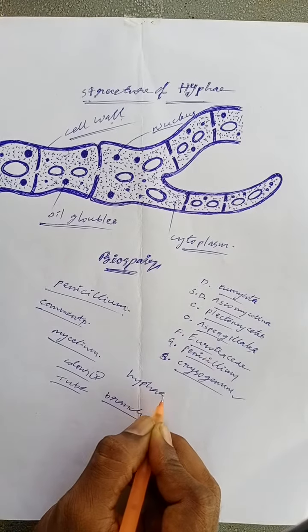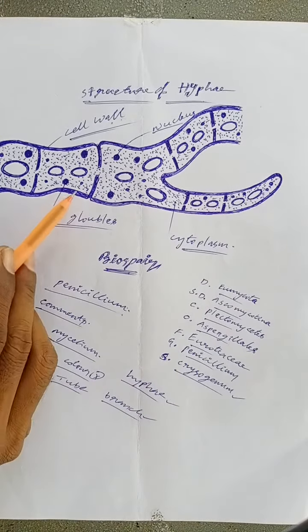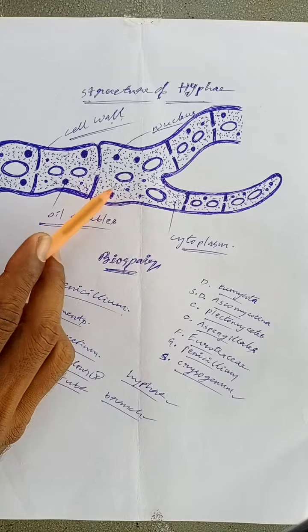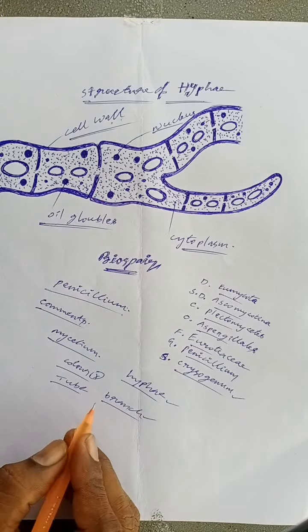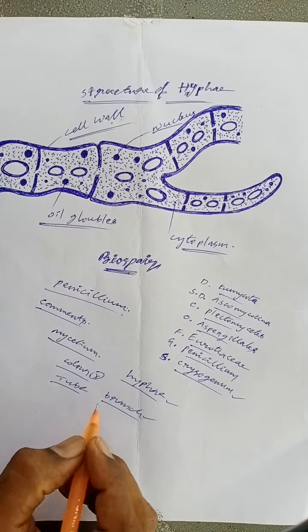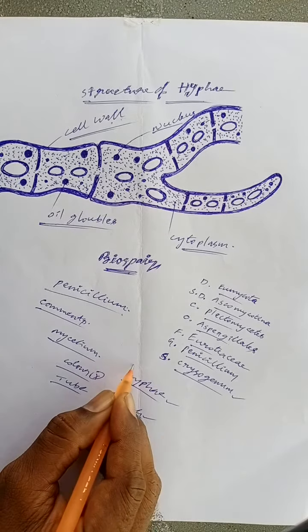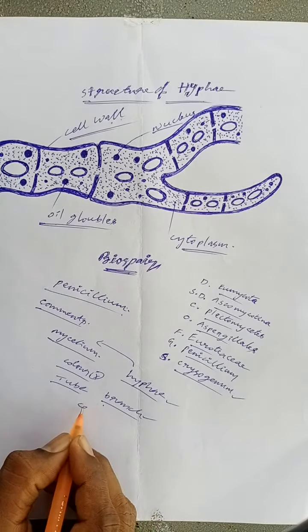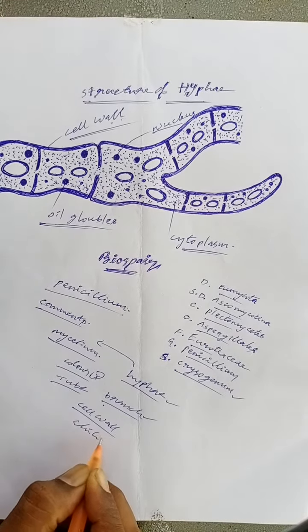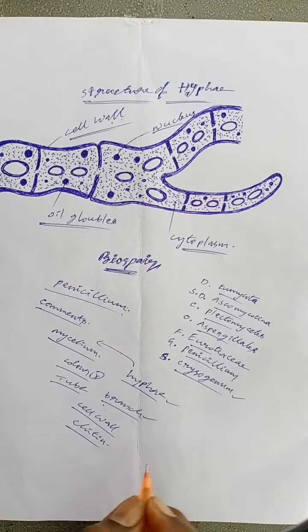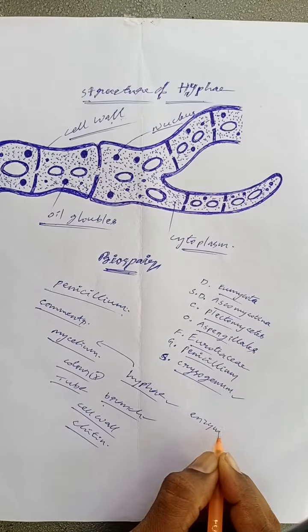The cell wall is made up of chitin. Some hyphae grow into the substratum and secrete enzymes and absorb food materials from the substratum. The septum of hyphae shows a central pore which allows the cytoplasm and nuclei to